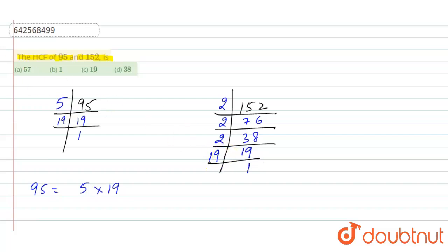So from here we can write the factors of 152, that is equal to 2 to the power 3 into 19, because 2 is coming three times. So what is coming common? We can see that 19 is coming common.